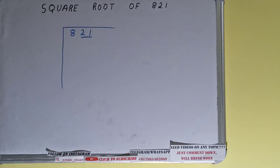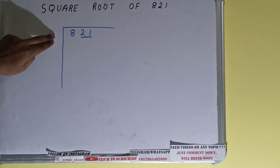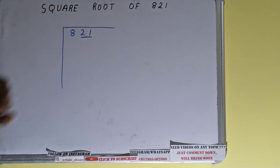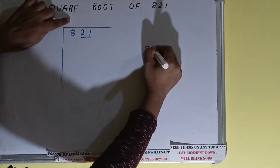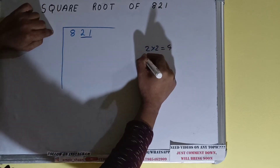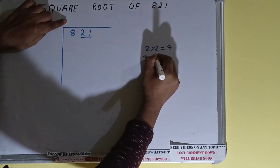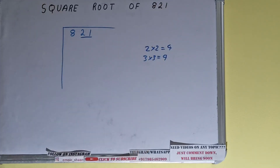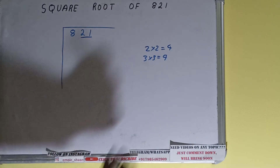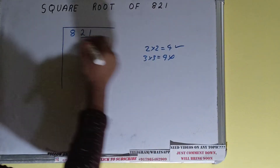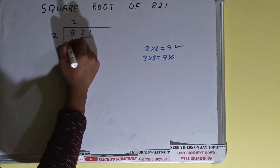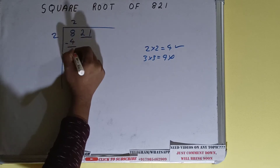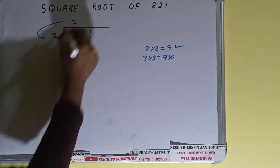The rule is whatever number we write here we have to write here also. So if we write 2 here and 2 here it will be 4. If we write 3 here and 3 here it will be 9. We cannot take 9 because it is greater than 8, so we have to take 4. So 2 here and 2 here will be 4. Subtract and 4 will be left.